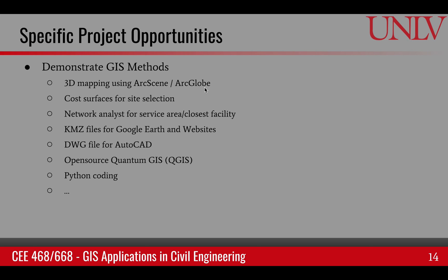You can also demonstrate GIS methods not yet covered — for example, ArcScene and ArcGlobe for 3D mapping, cost surface analysis, or network analysis. You can create KMZ files to bring from ArcMap into Google Earth, or create methods to exchange files between AutoCAD and ArcMap. You can look into open source GIS such as QGIS, or look into Python coding. There are endless opportunities — if you are interested in working a little bit extra, you can pick something from what we have already covered in class.